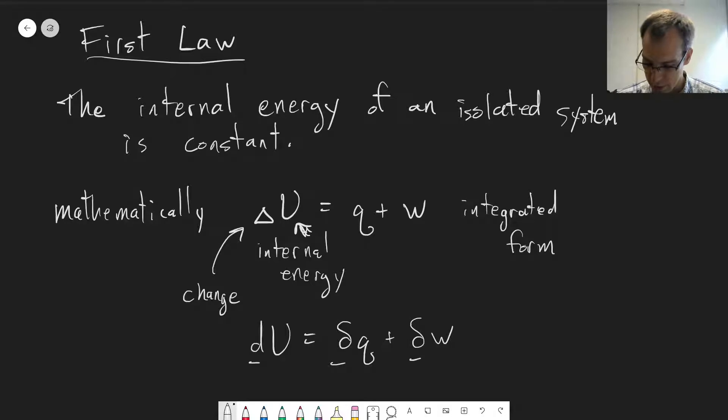And for an isolated system, we can specifically say that delta U, or dU, is equal to zero. That for an isolated system, the internal energy doesn't change. And then for anything else, the change in internal energy is equal to Q plus W. Now, what are Q and W?